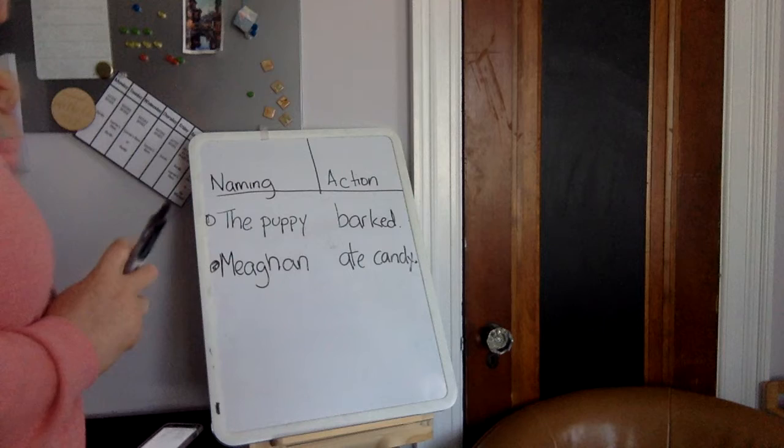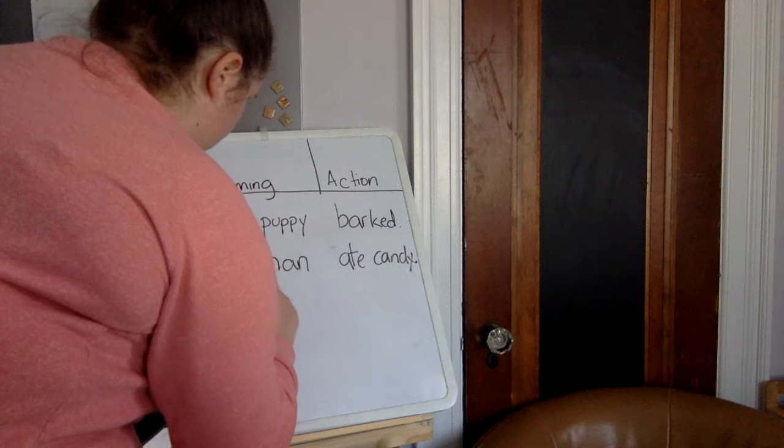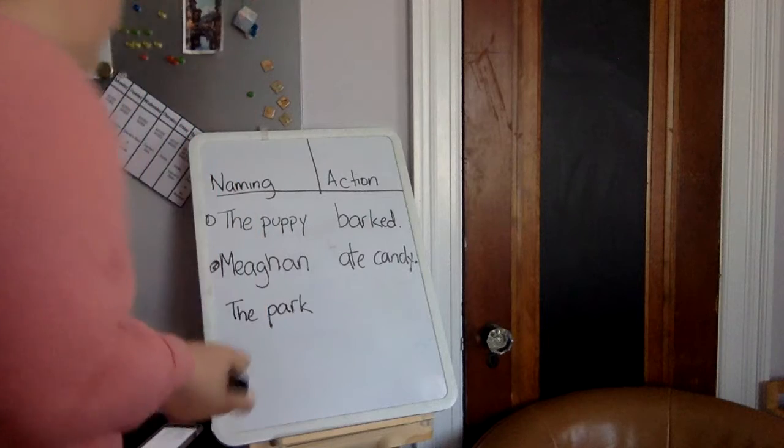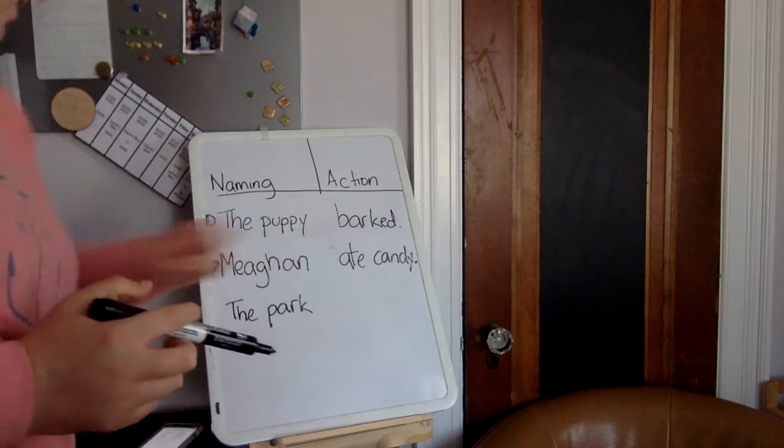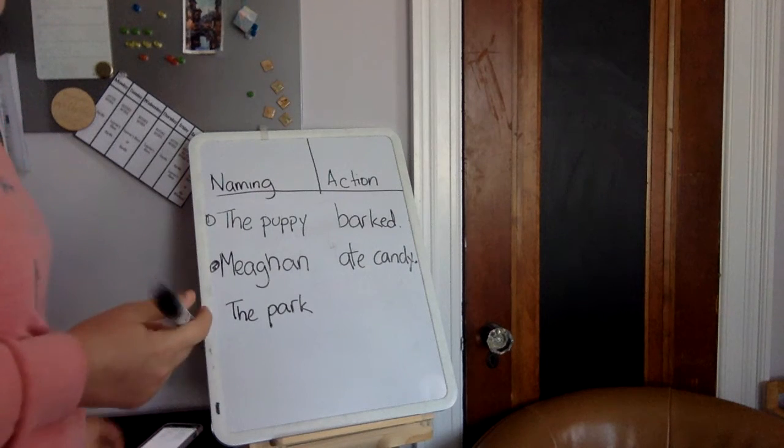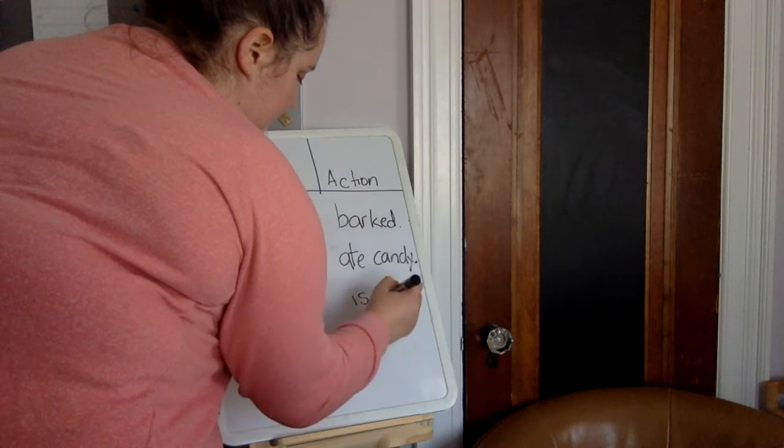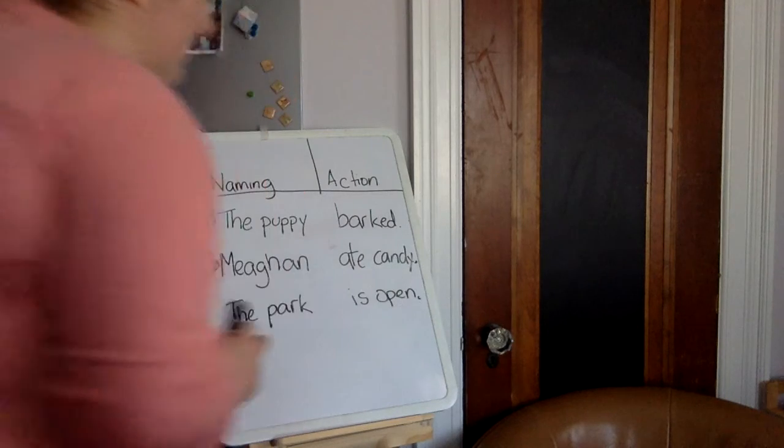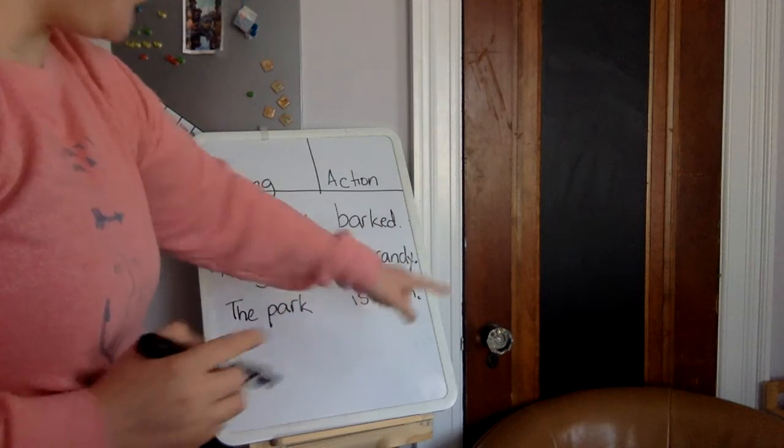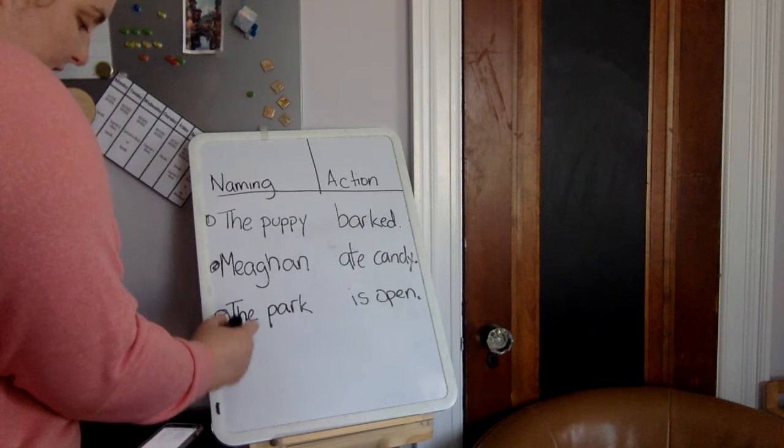What else can we name? What is somewhere that we go and play? Okay, the park. The park. The park. That's our naming part. Now we need an action. Is open. Look, we have our naming, the park, and our action is open. Because open is an action. Let's do another sentence.